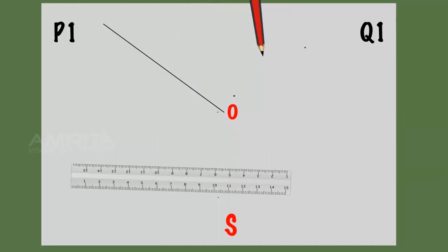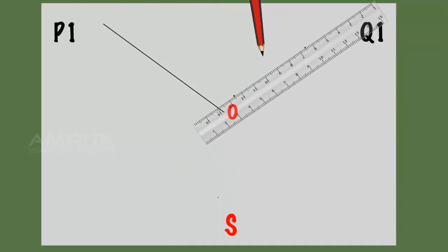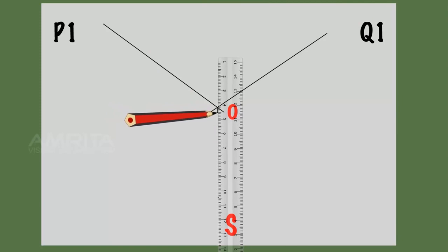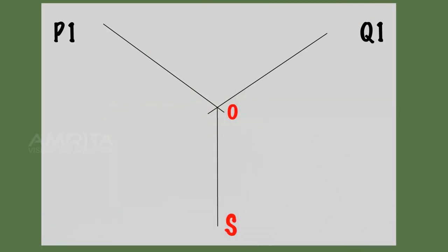Assuming a scale of 20g, OA is equal to 4cm, OB is equal to 4cm to represent P equals 80g weight and Q equals 80g weight respectively.